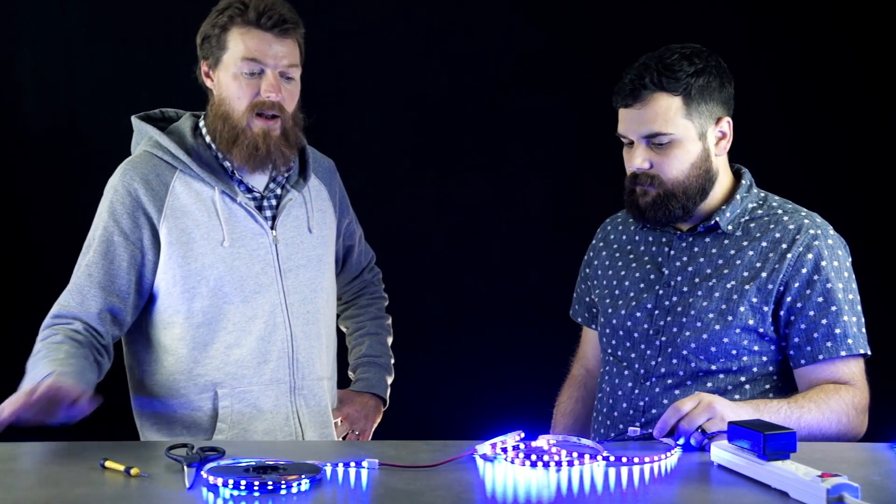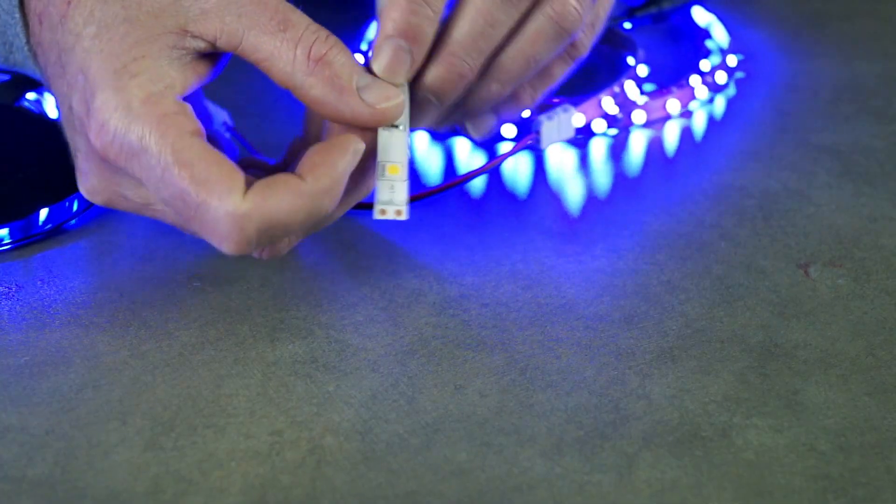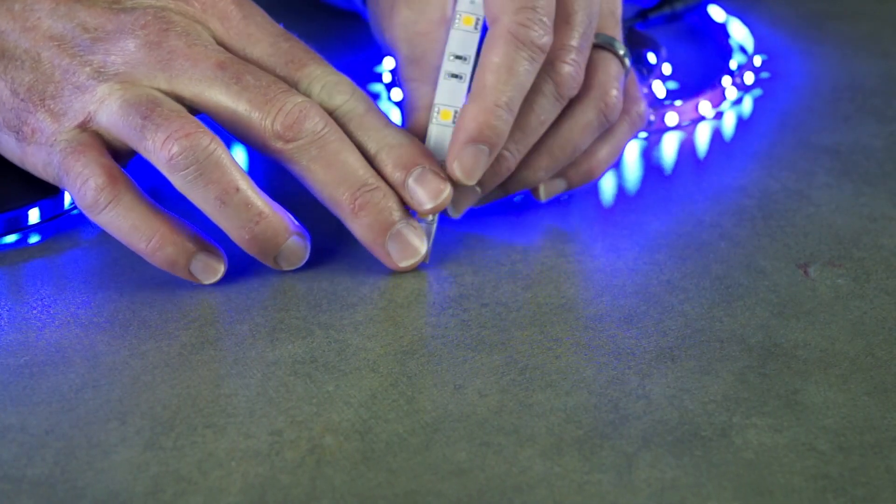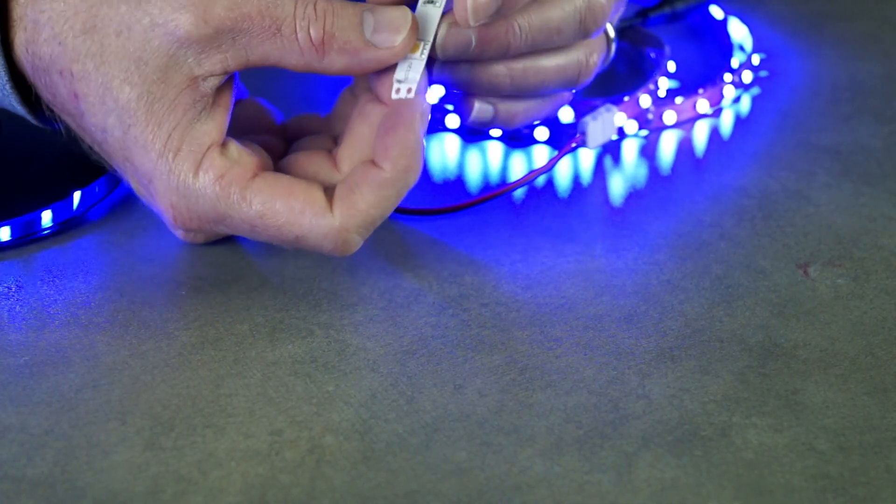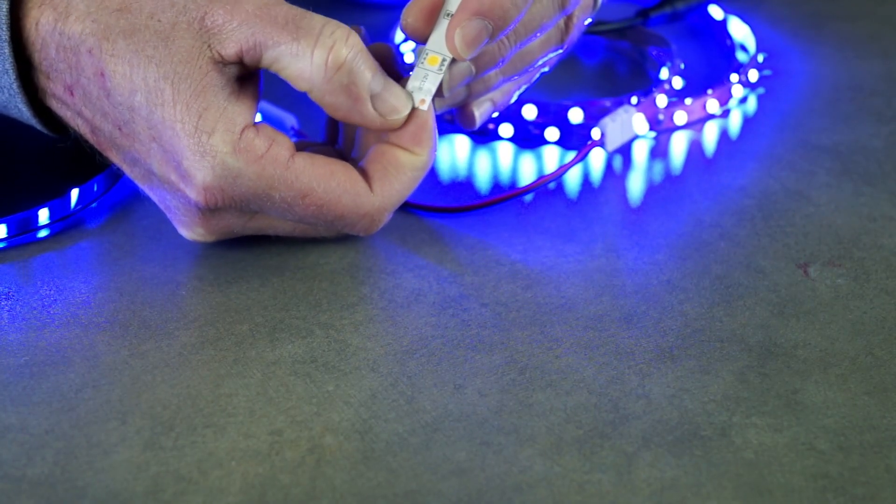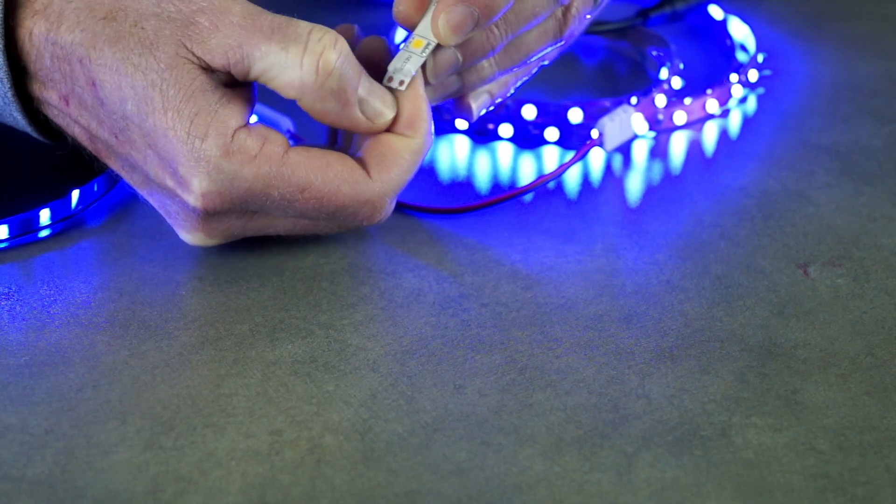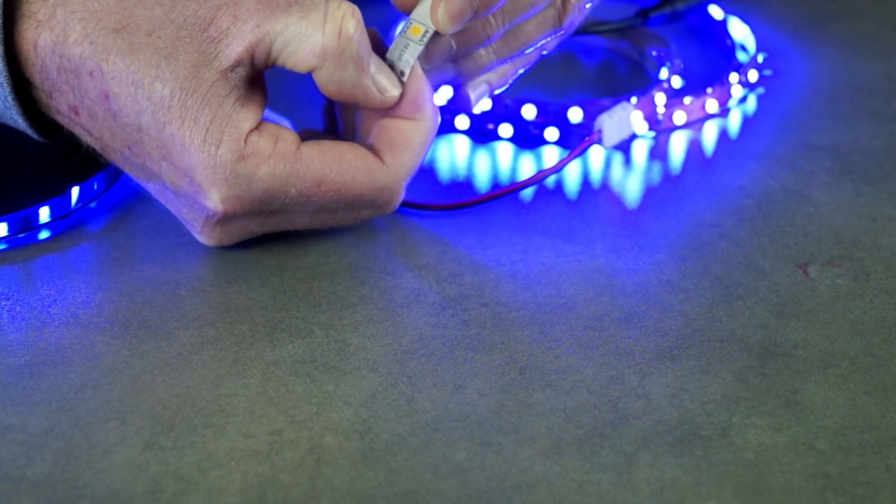If you're using the IP65 strip, once you've removed that silicone, sometimes you can take and scrape those copper pads with a small knife or your thumbnail and make sure there isn't any residue left on the copper pads. This could cause you to not make a good connection. So that's one thing to do if you have the IP65.